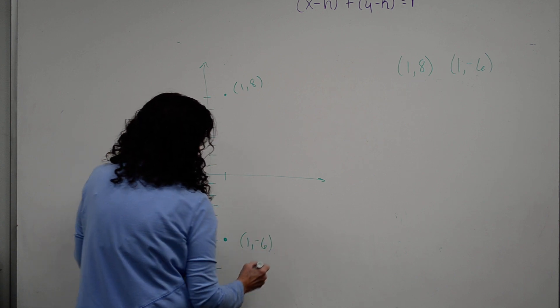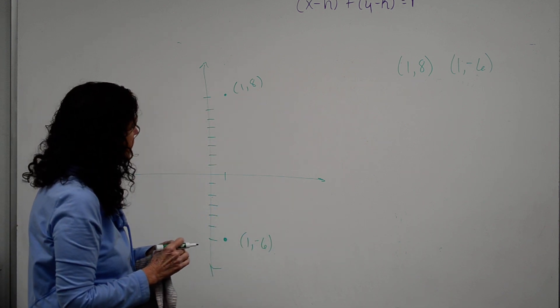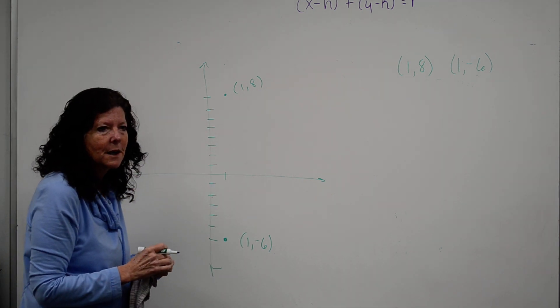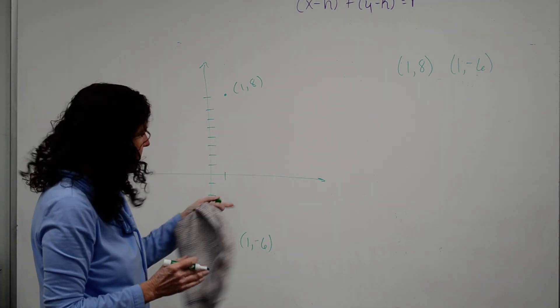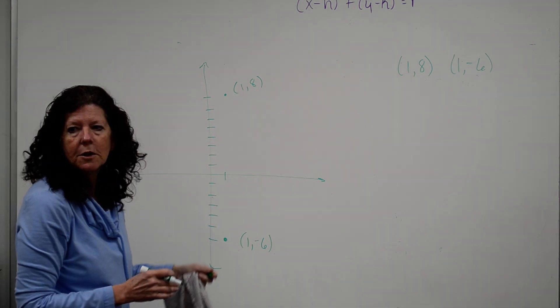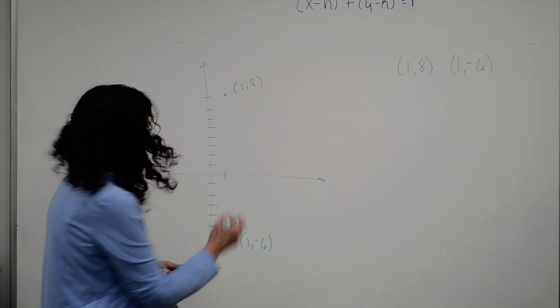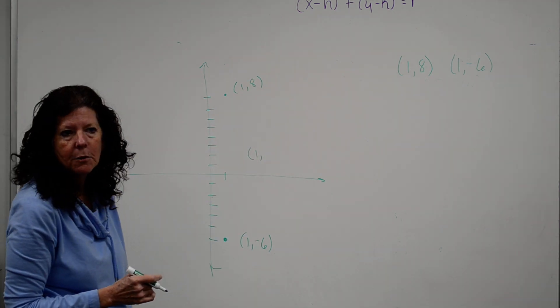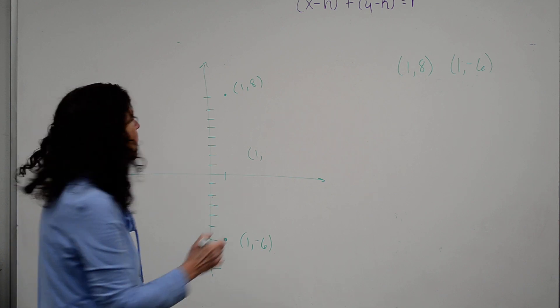Now, this one's, you can use the midpoint on it, but it's also pretty easy, because you could just say what's the distance between those, because they're vertical. Okay? But if you do the midpoint, you've got 1 plus 1, which is 2. What's 2 divided by 2? 1. 1. Okay. So, 1, 8 plus negative 6 is 2. What's 2 divided by 2? 1. 1.